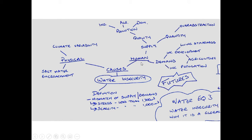There are also human elements of water insecurity with two different sides. They can directly affect the quality of water — although there may be plentiful water, pollution from industry, agriculture, or sewage from domestic use can affect the amount of clean water available to a population. This is a major issue particularly in developing and emerging nations where economic development often comes at an environmental cost.